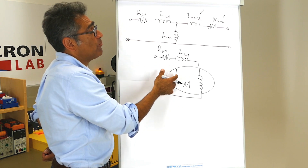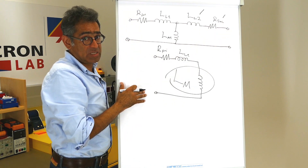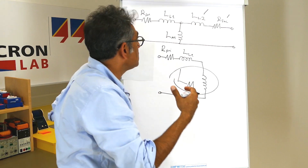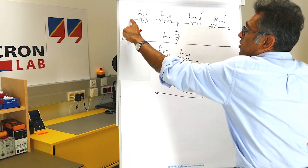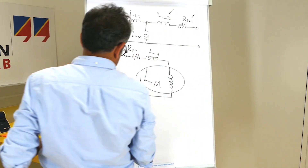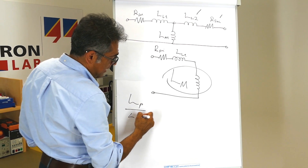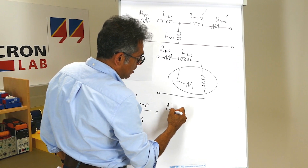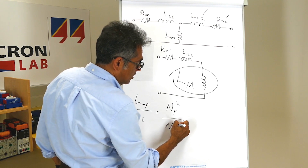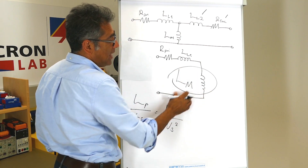So in order to measure LM, all we have to do is leave the secondary side open circuit. If you want to work out the turns ratio, you leave the secondary open and measure from both sides. We know from circuit theory that L_primary over L_secondary equals N_primary squared over N_secondary squared, and therefore we can work out the turns ratio. That is how we work out LM.